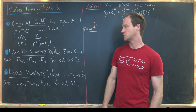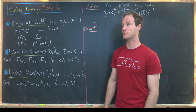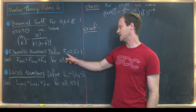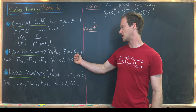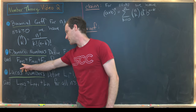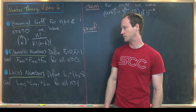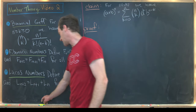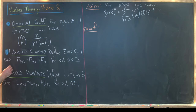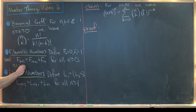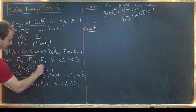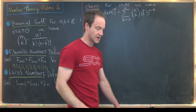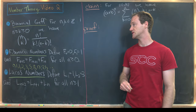Next, Fibonacci numbers — perhaps the most famous number sequence. We define the zeroth Fibonacci number to be 0, the first to be 1, and F_{n+2} equals F_{n+1} plus F_n for all n greater than or equal to 0. That gives us the sequence: 0, 1, 1, 2, 3, 5, 8, 13, 21, and so on.